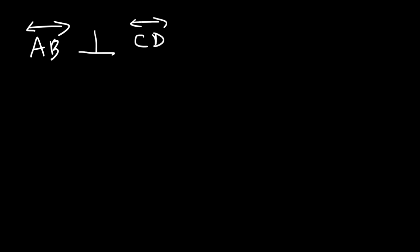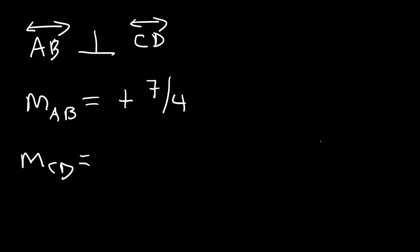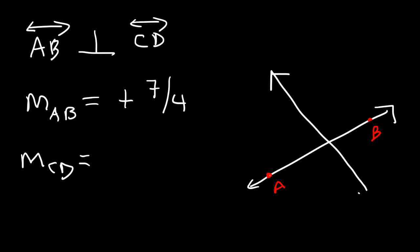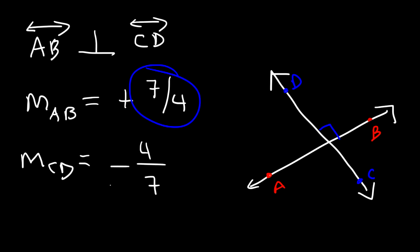Now let's say AB is perpendicular to line CD, and the slope of line AB is positive 7 over 4. What is the slope of line CD? Let's draw line AB and a line perpendicular to it — here we have line CD. To find the slope of a perpendicular line, you need to flip the fraction and change the sign. The slope of a perpendicular line is the negative reciprocal of the original line.